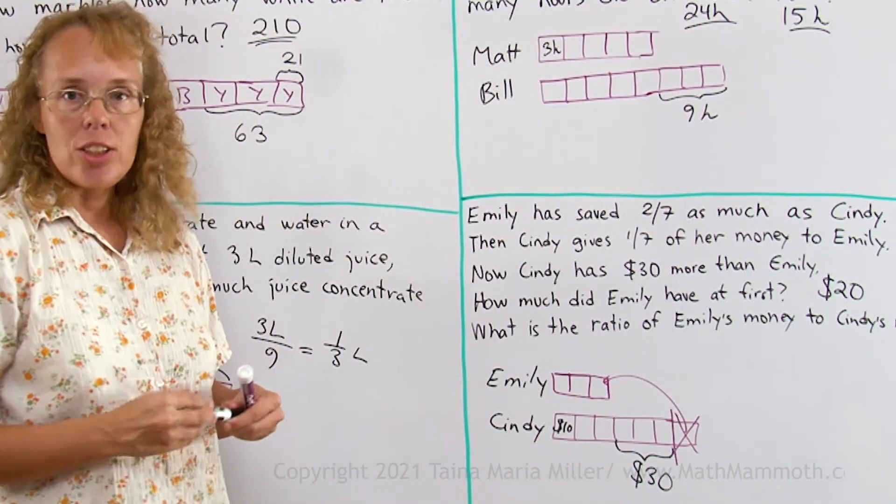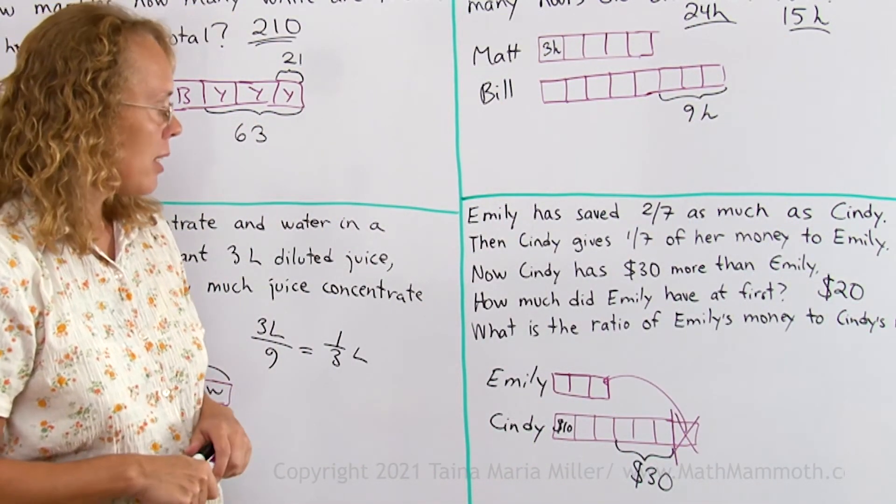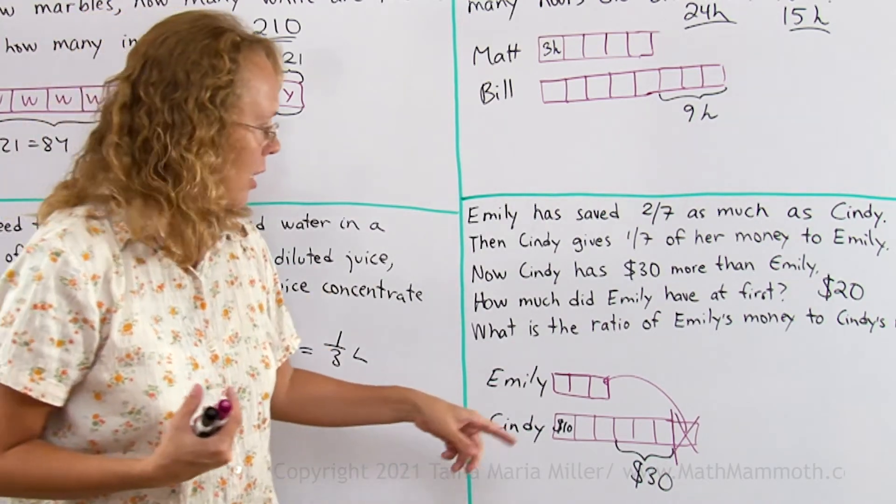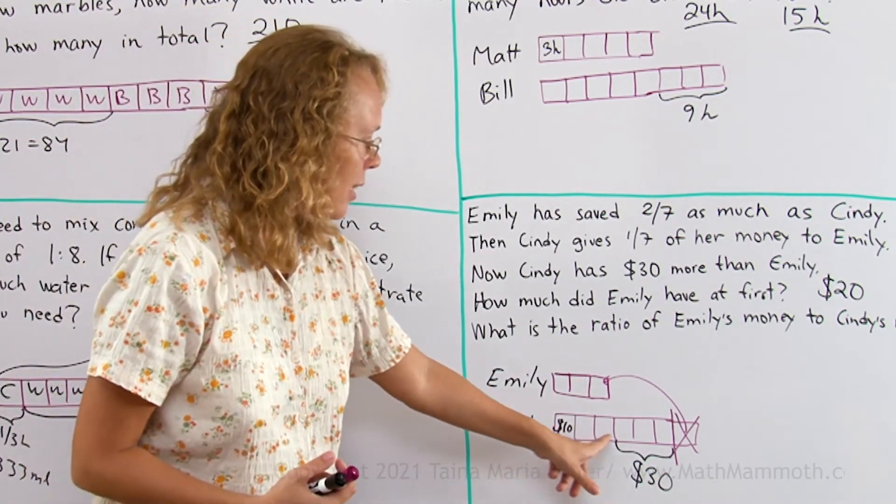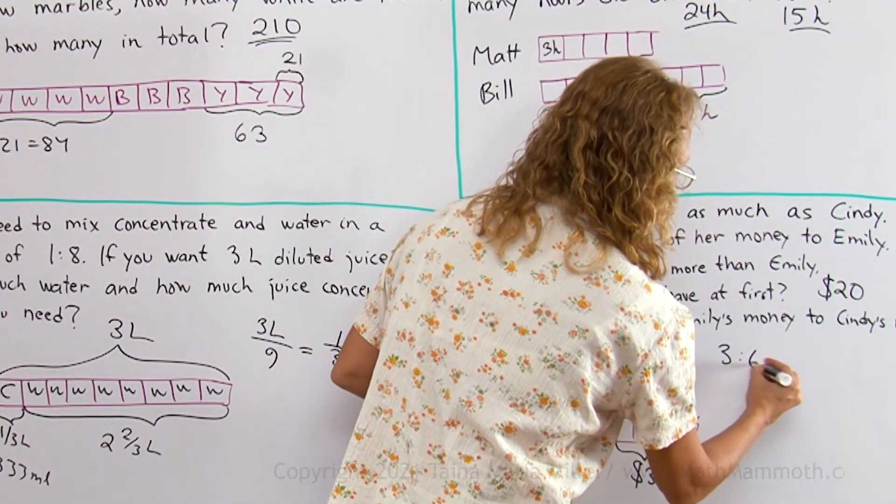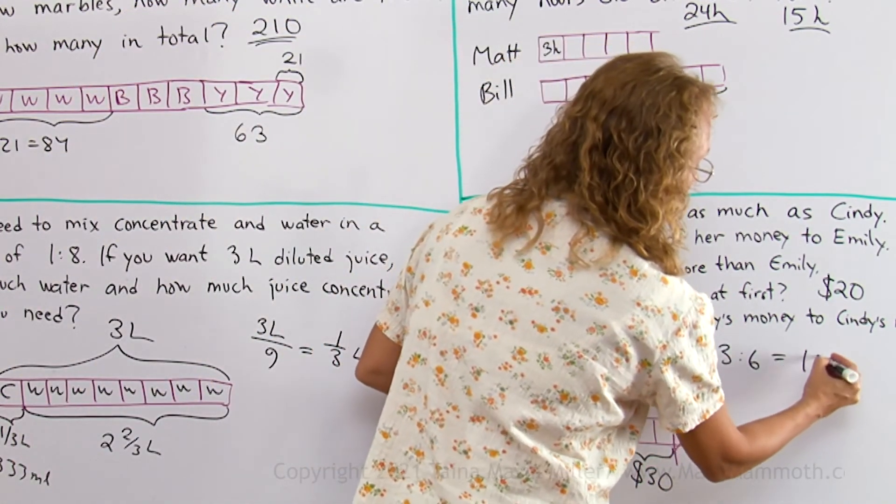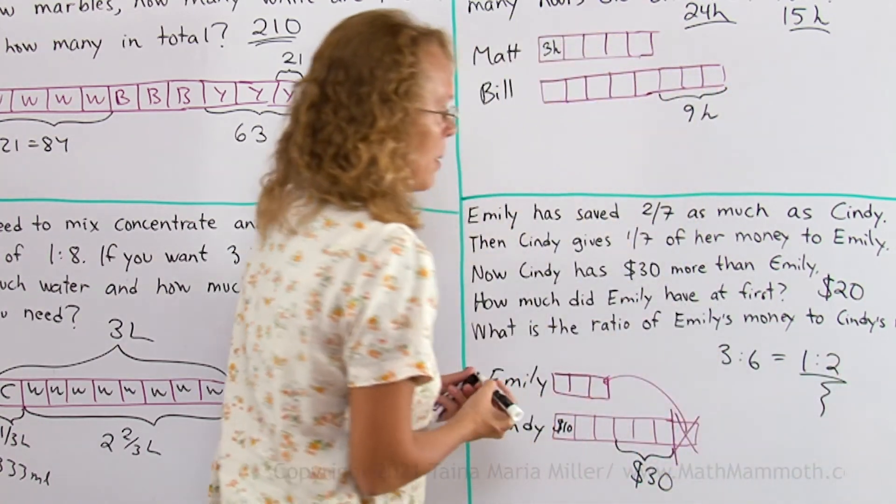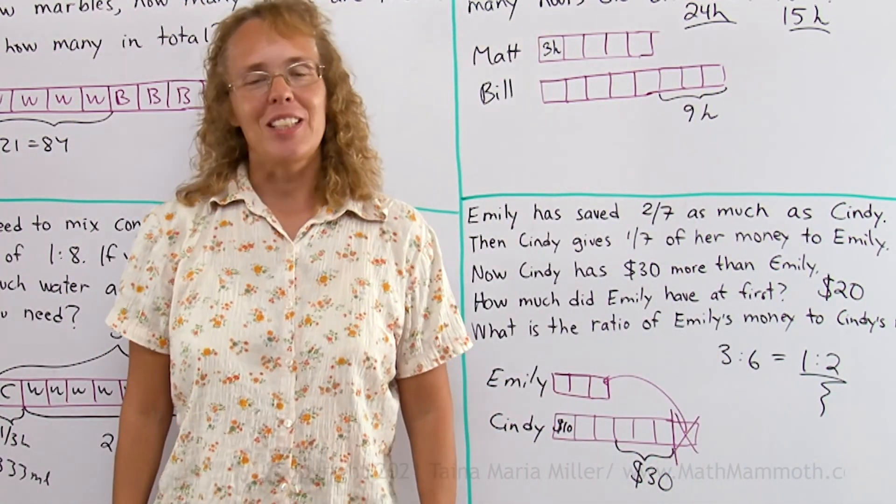And then what is the ratio of Emily's money to Cindy's money now? I can look at my blocks. Emily has now 3 blocks of money, Cindy has 6, so the ratio is 3 to 6. But that simplifies to 1 to 2. Okay. I hope this was helpful. Well done.